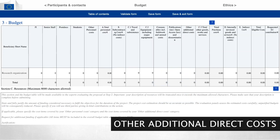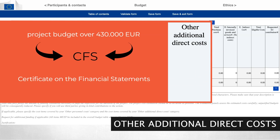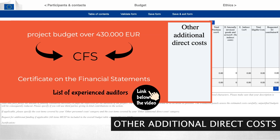As in most cases the project budget requested under ERC will exceed 430,000 euros, you should also reserve a budget for a first level audit. The audit costs fall under other additional direct costs and may reach 10,000 euros in the Czech Republic. The list of auditors who declared experience with first level audit and issuing the certificate on the financial statements is available on the Czech Horizon Europe website.